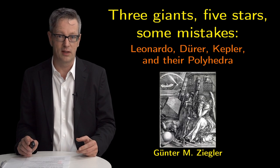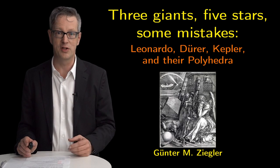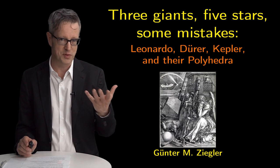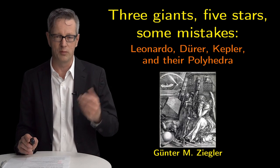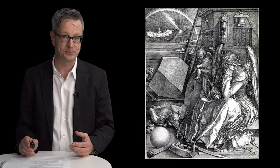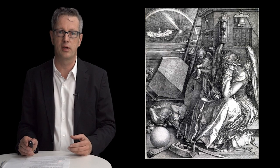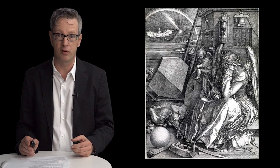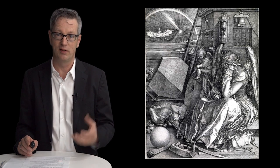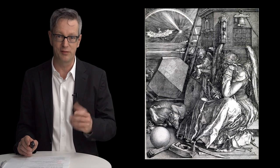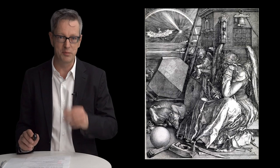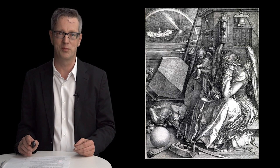This will be a lecture of mostly images, where I want to show you that you can actually see a lot of mathematics in the images. Most importantly, Dürer's three master prints and perhaps most importantly among those three, the one which shows the melancholia, which has this polyhedron in there. And actually, I am a geometer and one of my areas of specialty is polyhedra, so people consider me an expert on polyhedra.